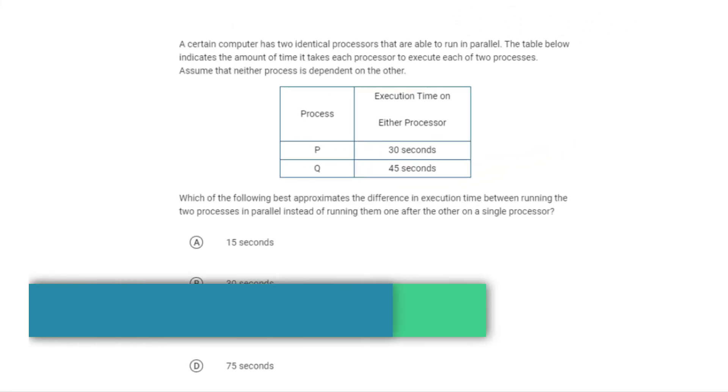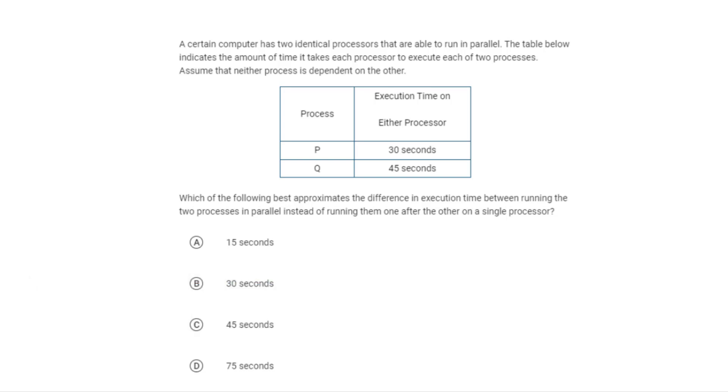Here's a very similar problem, but the phrasing of it is a little bit different. This one asks, which of the following best approximates the difference in execution between running the two processes in parallel instead of running them one after another? So the answer is a little different. It's not just computing what the total runtime would be here, but what the difference in the runtime is. Let's actually figure this out. The easiest way to do this is actually just to get both numbers and compare them.